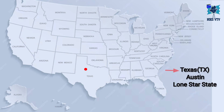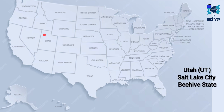Next state is Texas, its abbreviation is TX, its capital is Austin, its time zone is CST, and its nickname is Lone Star State. Next state is Utah, its abbreviation is UT, its capital is Salt Lake City, its time zone is MST, and its nickname is Beehive State.